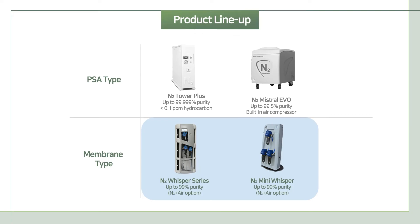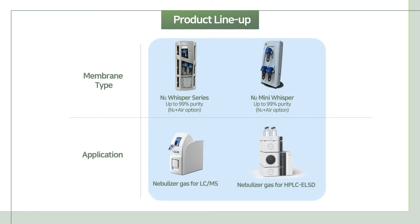There are two models of membrane type nitrogen generator. The Whisper Series nitrogen purity is up to 99% and it has various product options by flow rate. Depending on your application or the purity you need, you can choose the products. The Whisper Series are used for nebulizing gas, electrospray gas, jet stream gas for LC-MS, ELSD for HPLC, NMR, and more.